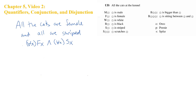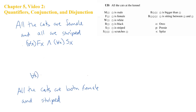Now consider this example: all the cats are both female and striped. Again, if we follow the pattern in the English, we're going to wind up with this: for every x, it is both female and striped. So we have one universal quantifier, and the parentheses indicate the scope of that quantifier extends across both Fx and Sx.